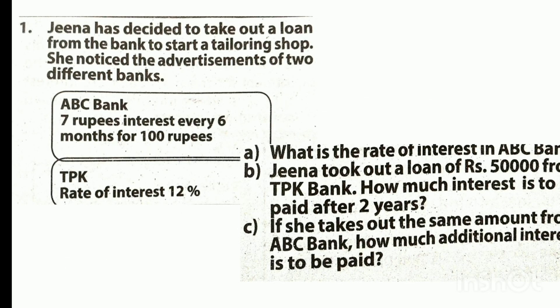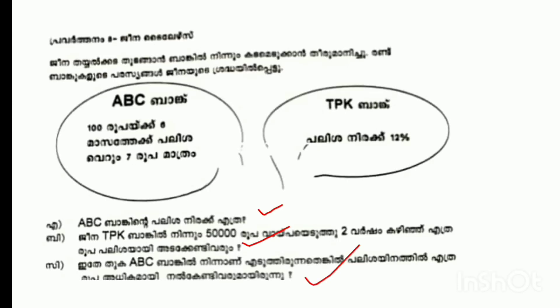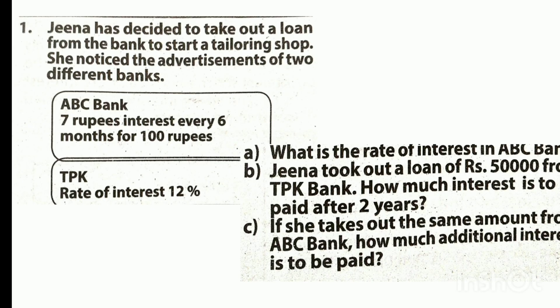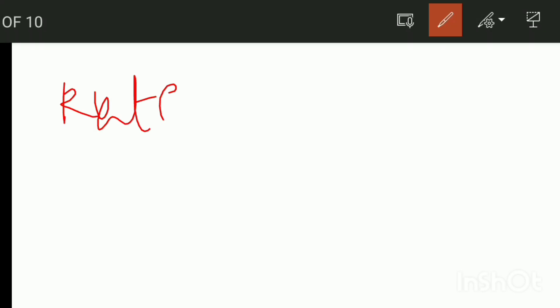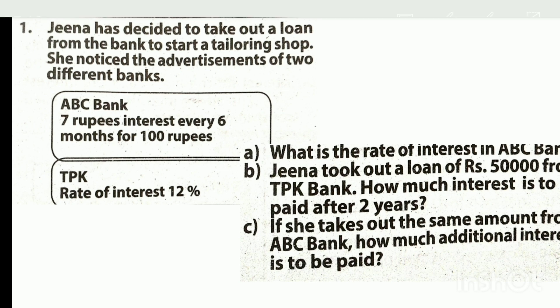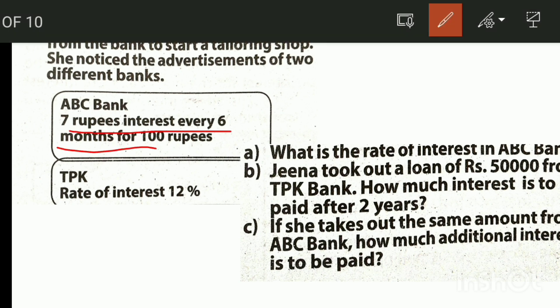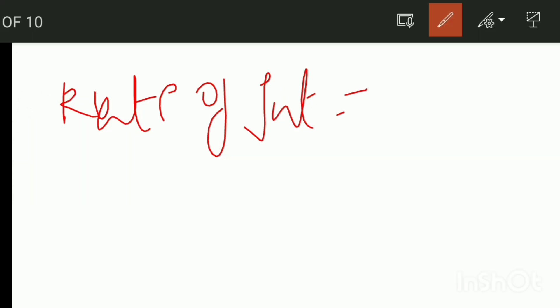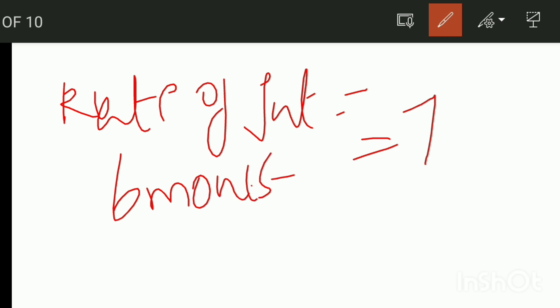This is the rate of interest in ABC bank. We calculate the rate of interest in ABC bank. 7 rupees interest for 6 months for 100 rupees. 7 rupees is 6 months for 100 rupees. Today we will work out the rate of interest and calculate for 6 months.